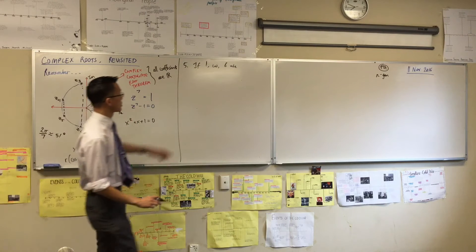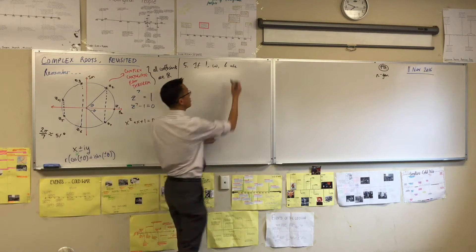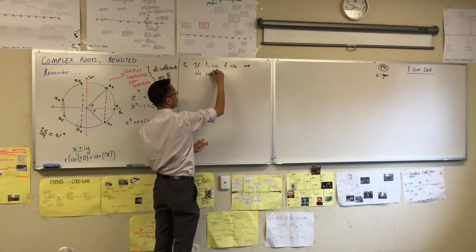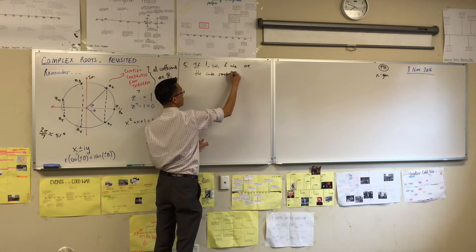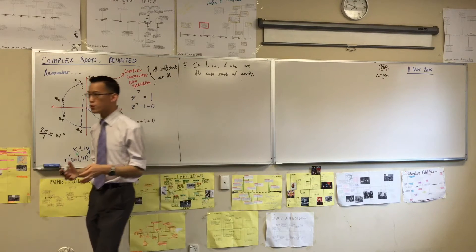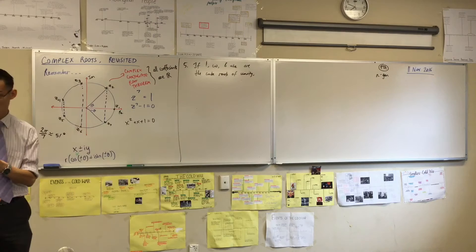This question 5 starts off like this. It tells you if these guys are the cube roots of unity. So we were talking about this just a second ago. And then we're asked to prove a whole bunch of algebraic results.